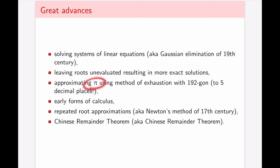They did approximate pi using the method of exhaustion, but now with 192-gon, which made it correct up to five decimal places. We see early form of calculus resulting from this method of exhaustion idea of breaking things into smaller and smaller pieces, repeated root approximations resulting from that, which is similar to Newton's method, method that something that we now know as Newton's method. And finally, the Chinese remainder theorem that at least kept its origin in its name.